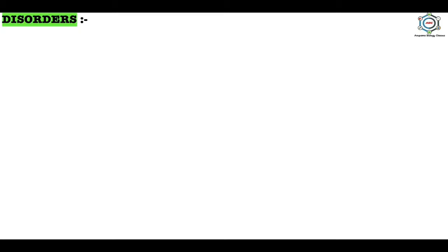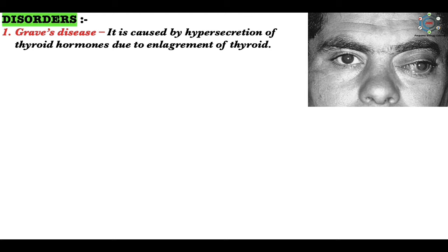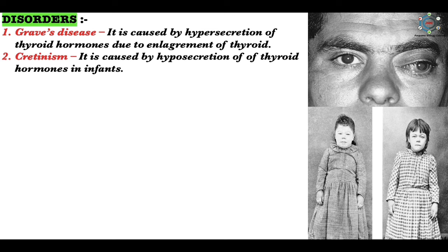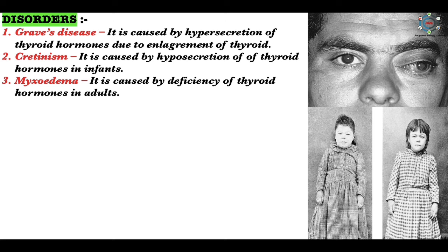Disorders of thyroid hormones: Graves' disease is caused by hypersecretion of thyroid hormones due to enlargement of the thyroid. Excess thyroid hormones increase metabolic rate and accelerate oxidation, leading to quick heartbeat, rise in blood pressure, high body temperature, nervousness, irritability, tremor, and bulging eyeballs. Cretinism is caused by hyposecretion of thyroid hormones in infants, leading to slow heartbeat, lower blood pressure, decreased body temperature, stunted growth, mental retardation, awkward body with pot belly, protruding tongue, pigeon chest, and retarded sexual development. This can be treated by hormonal therapy.